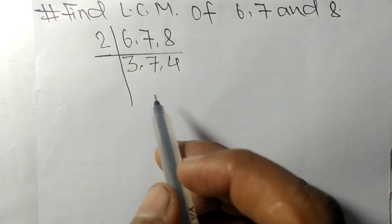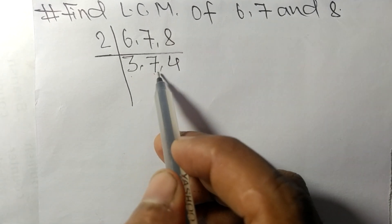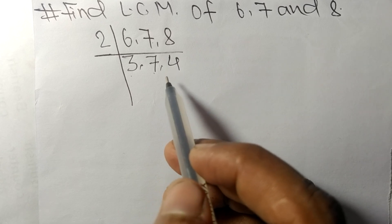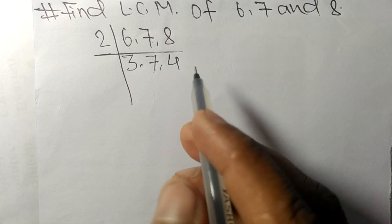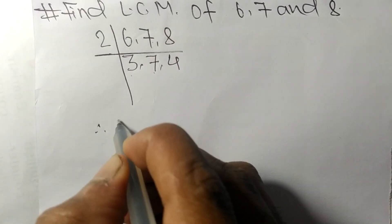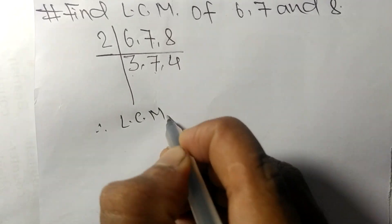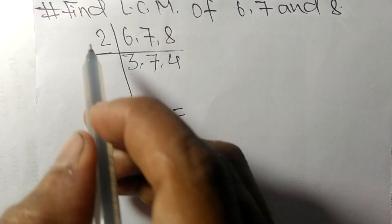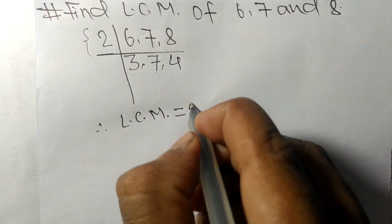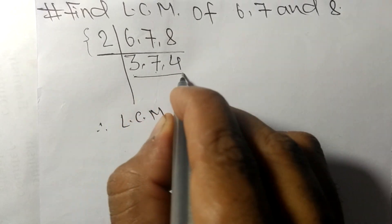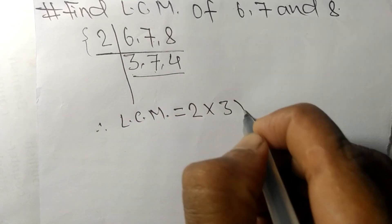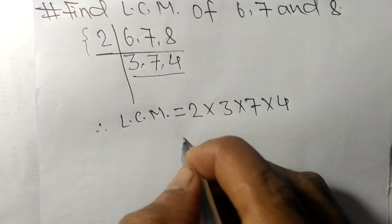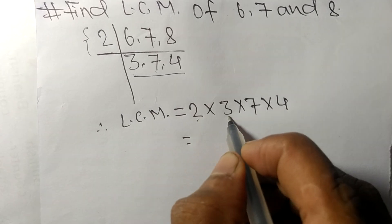Now we got 3, 7 and 4 which are not exactly divisible by the same number. Therefore, LCM is equal to - from this side it is 2, from here we get 3, 7 and 4. 2 times 6 means...